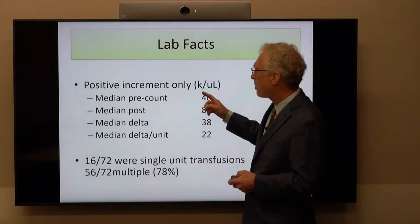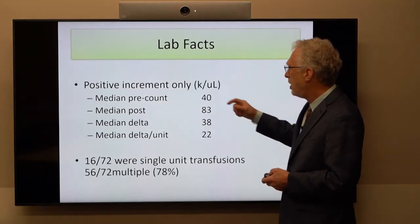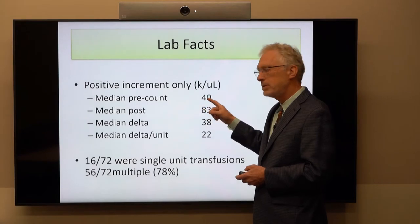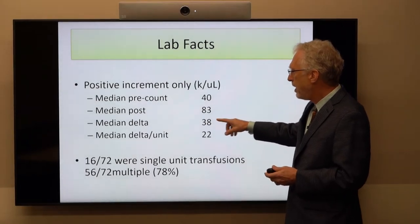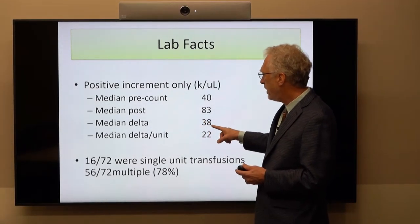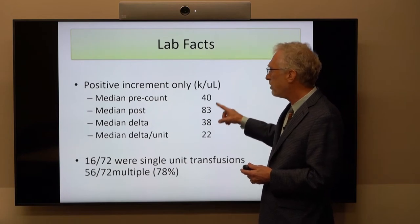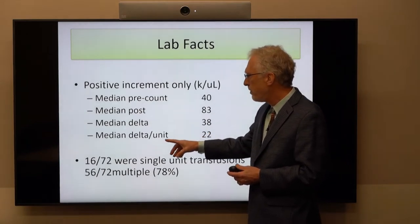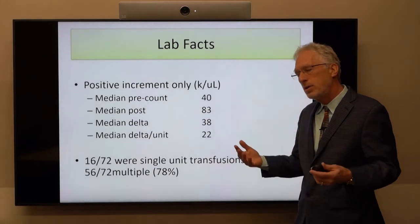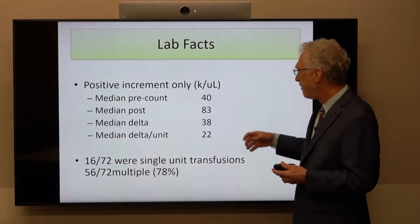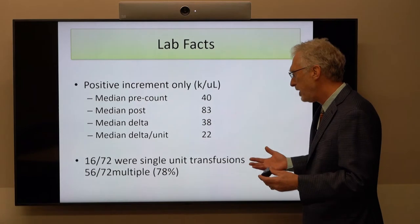Looking at just those with a positive increment, the median pre-transfusion platelet count was 40,000 per microliter, the median post count was 83,000, and the median increment was 38,000 per microliter. However, most of these were multiple-unit transfusions, so the median increase per unit was actually 22,000 per microliter. In our hospital, an increment of around 20,000 to 22,000 per microliter is a pretty typical satisfactory response.